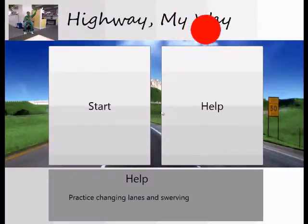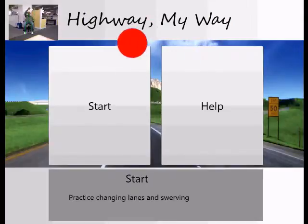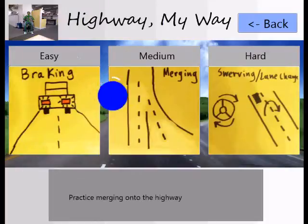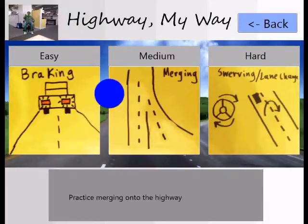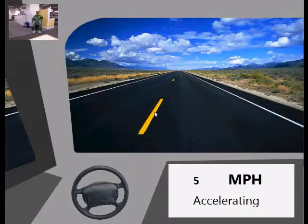Welcome to My Way Highway. The user can use his left or right hand to move the cursor. Hover over a button for two seconds to select it. Here we can see the three tasks. Hover over a task to see a description. Let's go to the easy task.